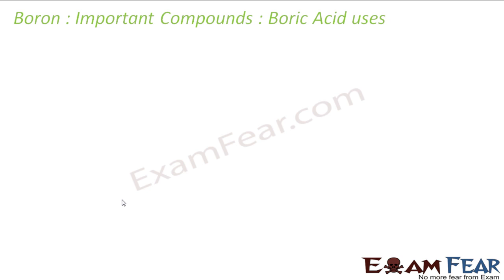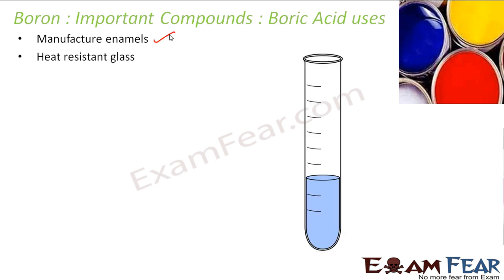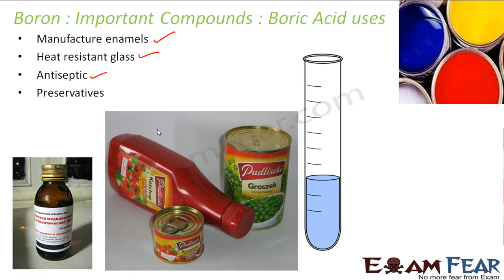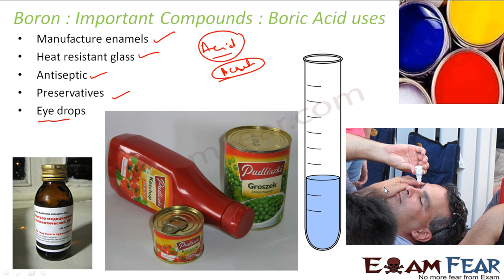The uses of boric acid include: enamel used to paint windows, preparation of heat-resistant glass, antiseptics, and food preservatives such as in canned sauces and juices. It is also used as eye drops — the only acid safe for the eye. While other acids like sulfuric or hydrochloric acid would burn your eye, boric acid is safe because it is not a proton donor, is not harsh, and is a Lewis acid that only accepts electron pairs.